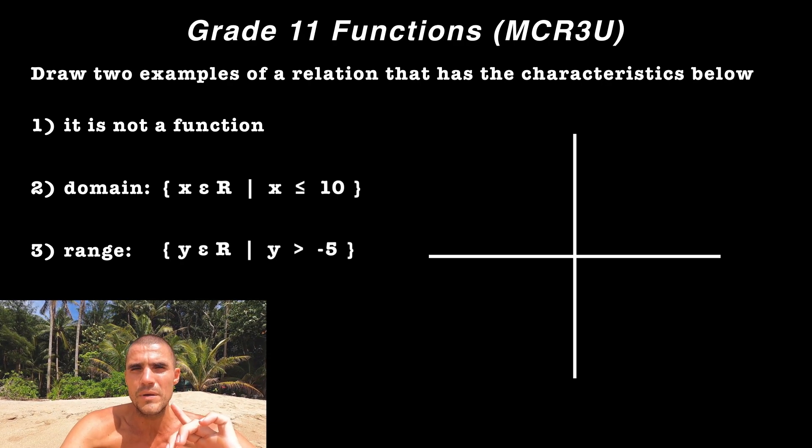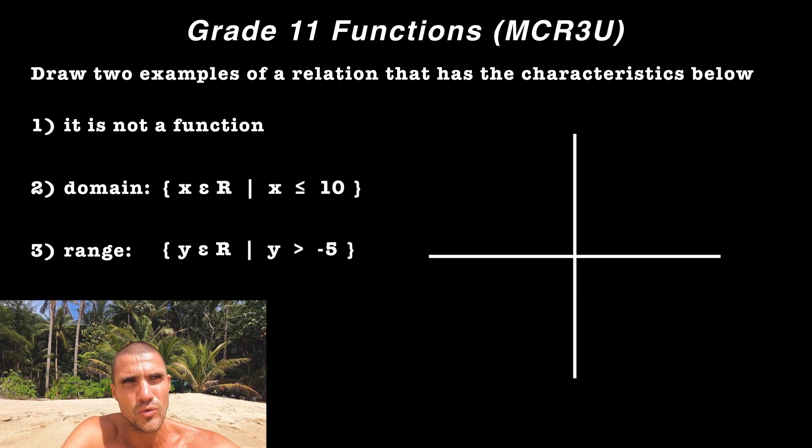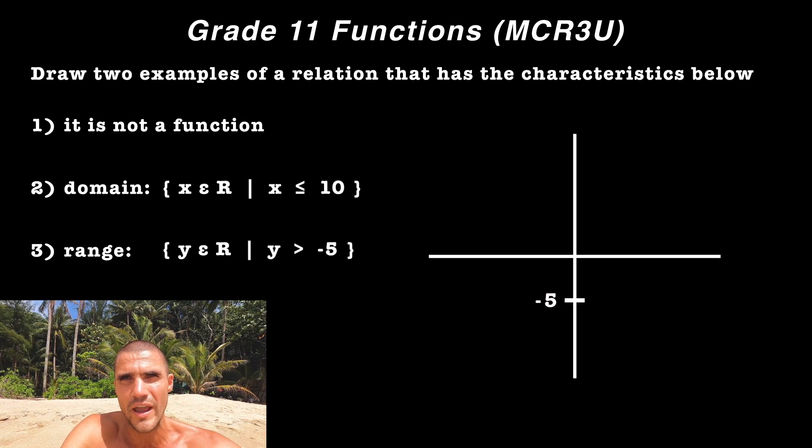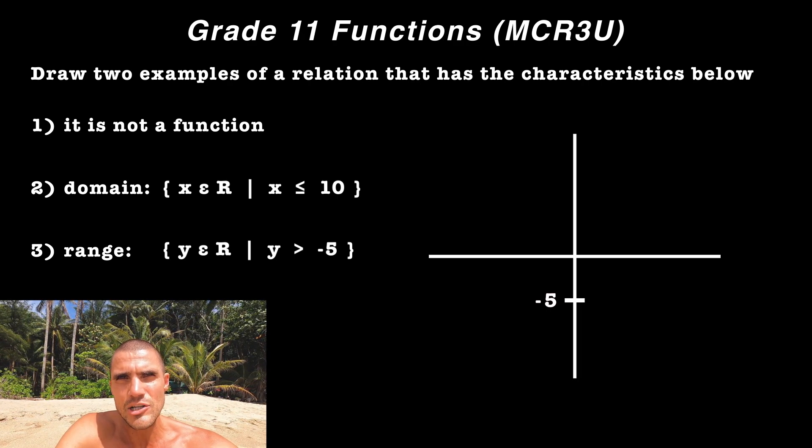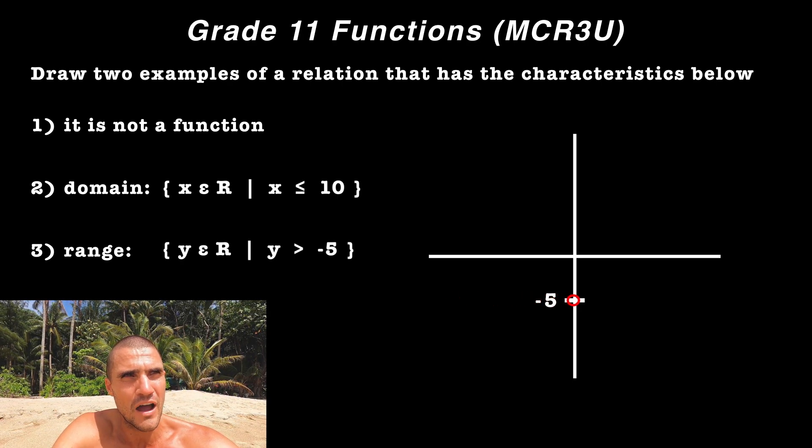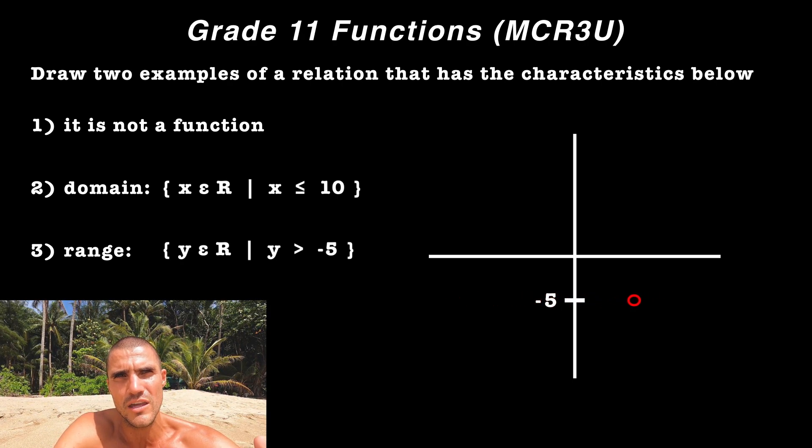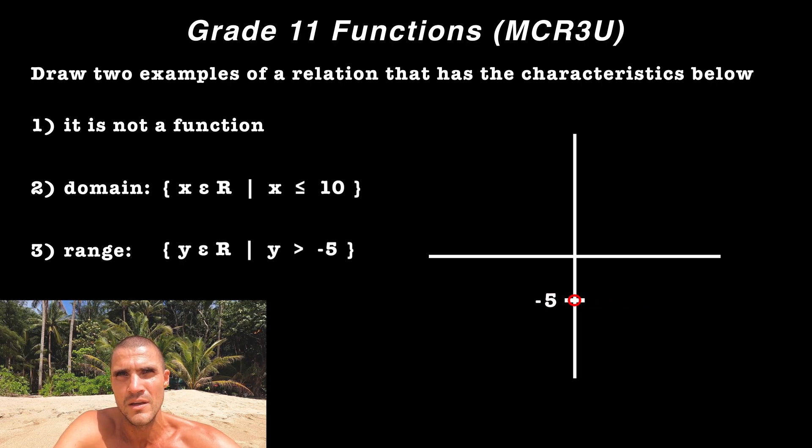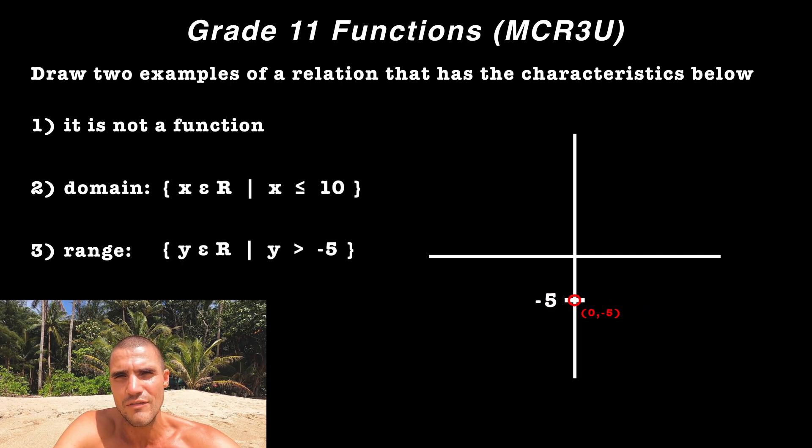With the range being Y ∈ R, and Y has to be greater than negative five, because it's greater than negative five, let's actually put a hole somewhere on a Y value of negative five. Let's actually just do it on the Y axis. So let's put a point, zero and negative five.